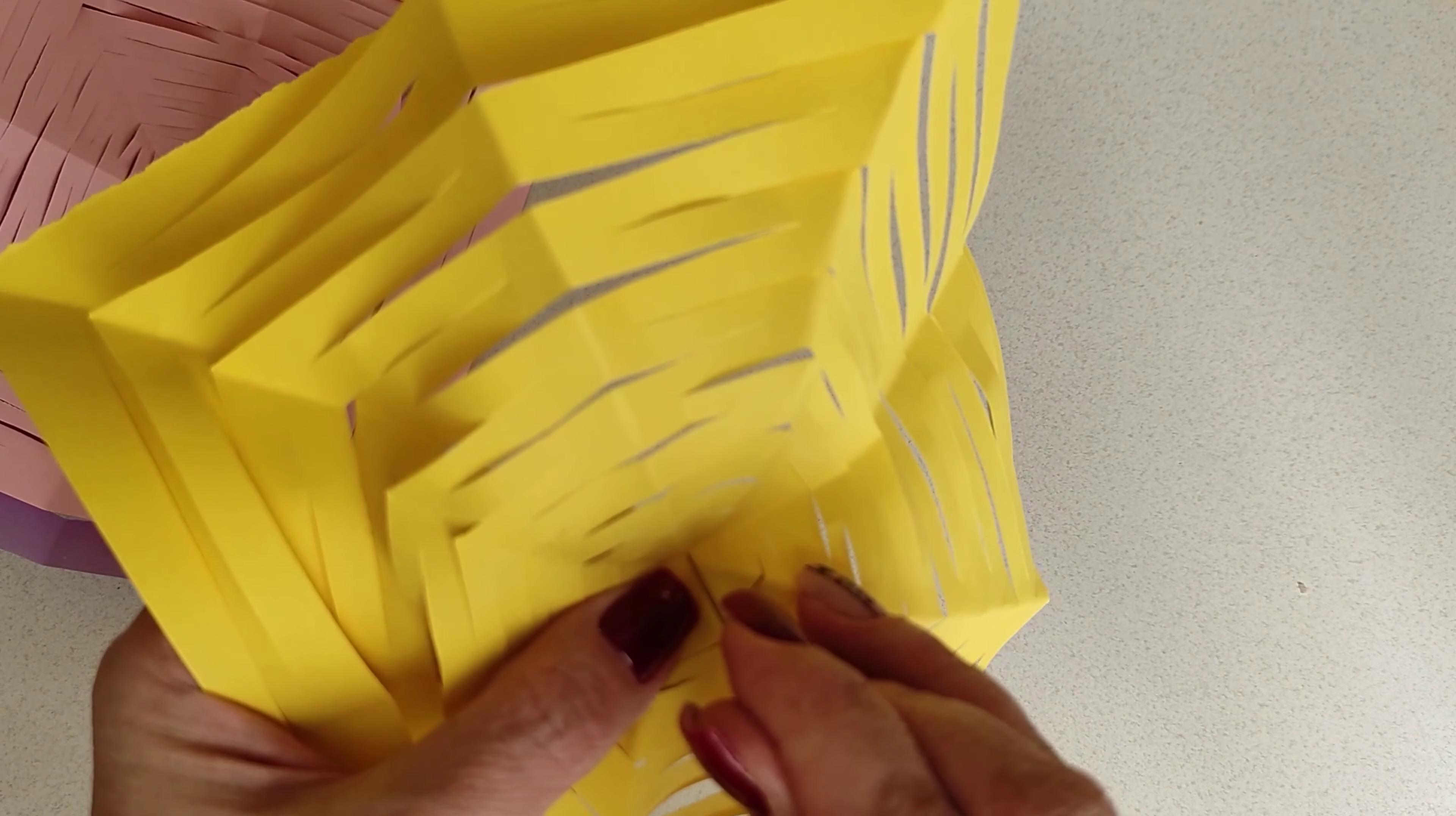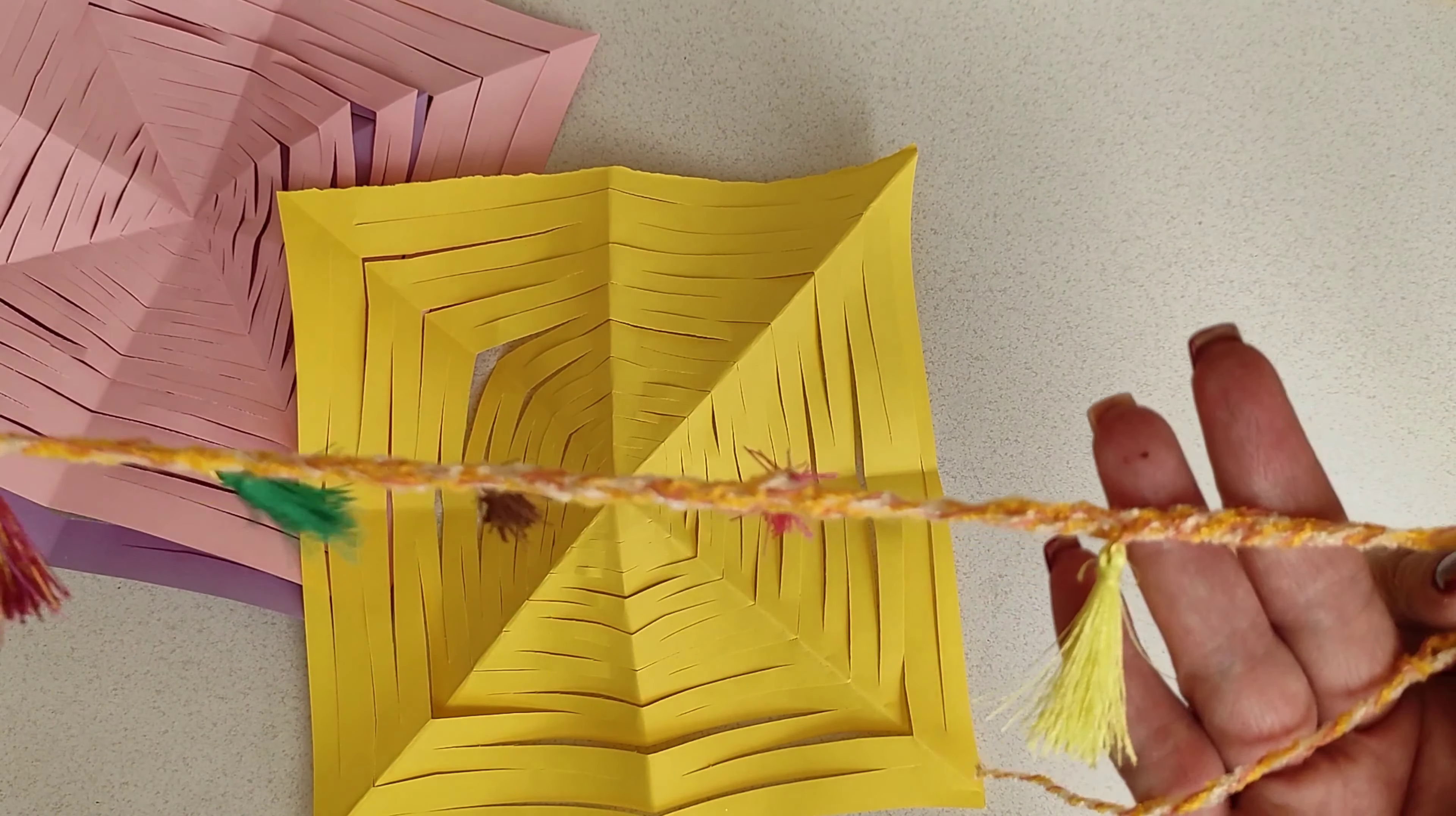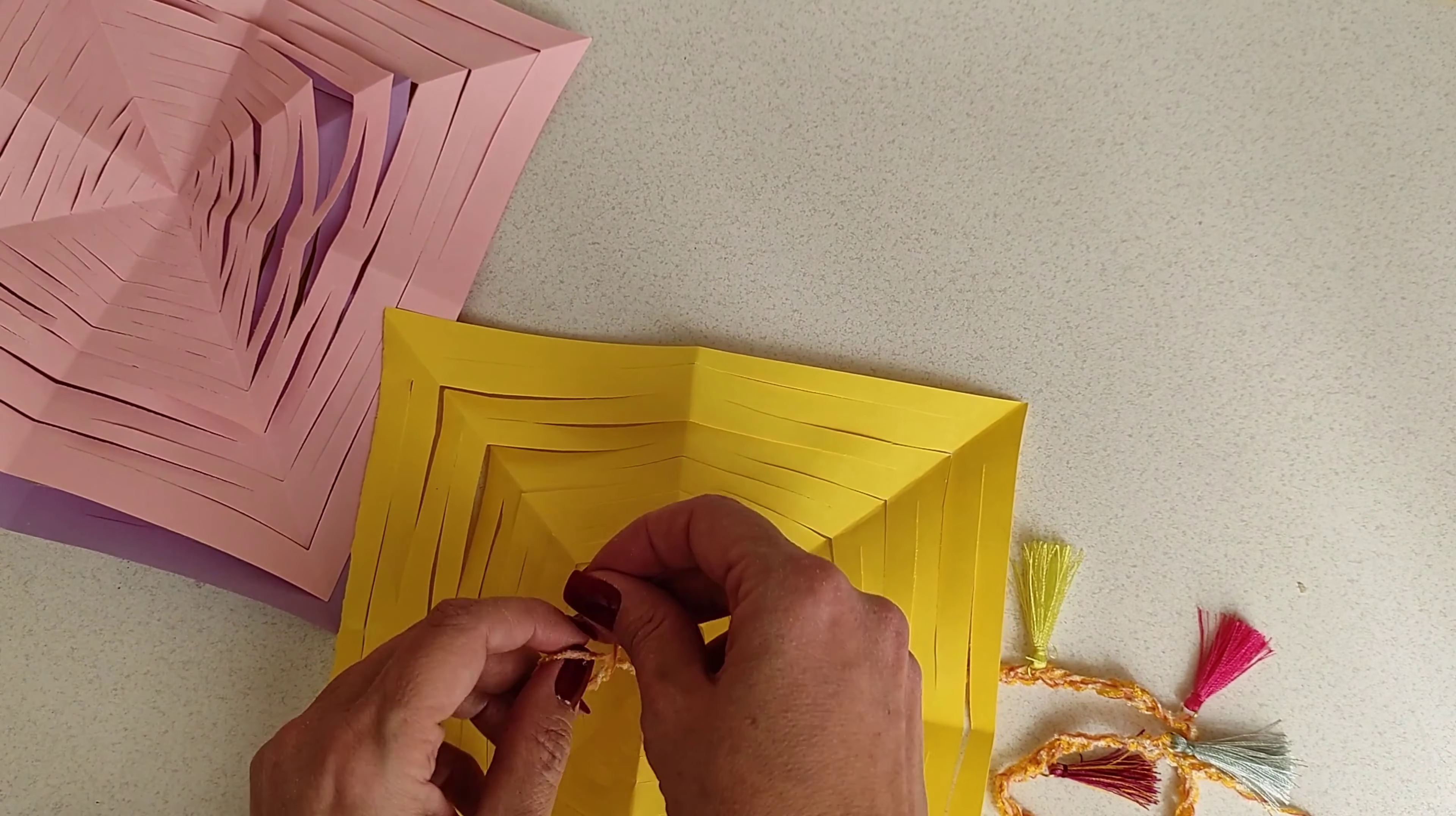Now we're going to use this needle to put this yarn string we made through the center of one of our papers. To see how we made it, check out the card above. Tying the end of the string so it won't get out.